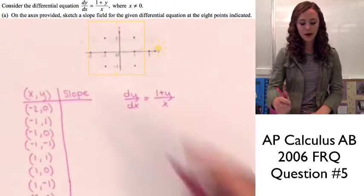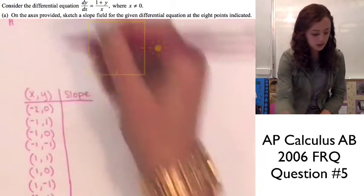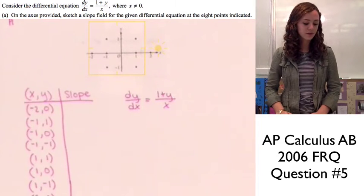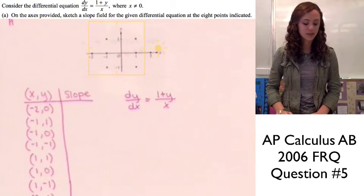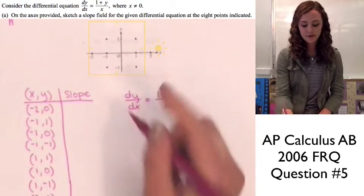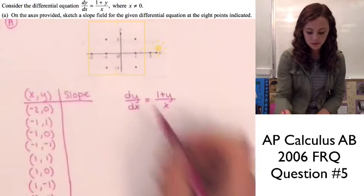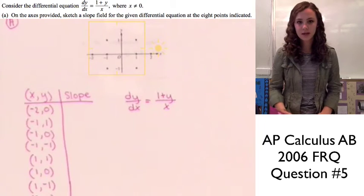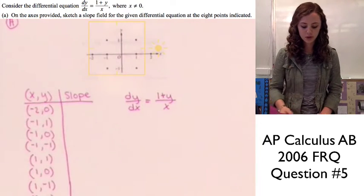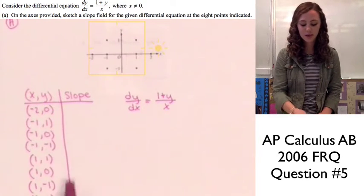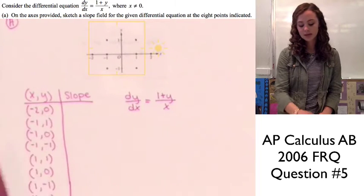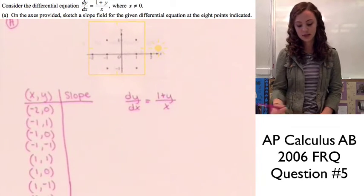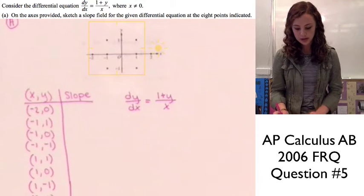On part A, which we're going to be working on, it says: on the axis provided, sketch a slope field for the given differential equation at the 8 points indicated. We have our slope field on our piece of paper, and I went ahead and wrote each point indicated in a chart. We're going to find the slope by plugging in the x and y coordinates into the differential equation.